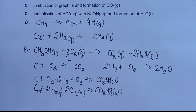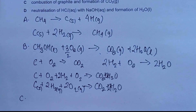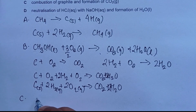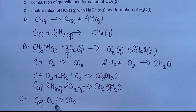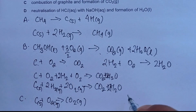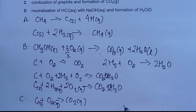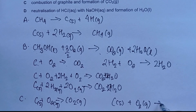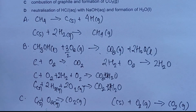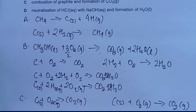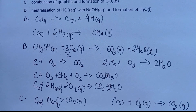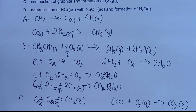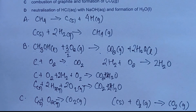Choice C is combustion of graphite versus formation of carbon dioxide. Combustion of graphite: C (solid) + O₂ (gas) → CO₂ (gas). Formation of CO₂ from its constituent elements: C (solid) + O₂ (gas) → CO₂ (gas). Both equations are identical — same reactants and same products — so choice C is correct.